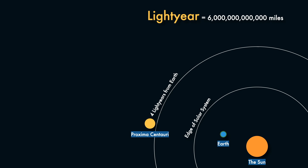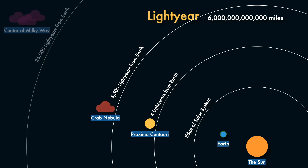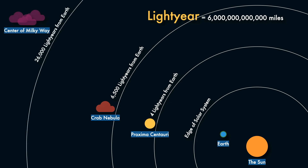The star Proxima Centauri is our nearest neighboring star, approximately 4 light years from Earth, meaning it takes starlight from Proxima Centauri 4 years to reach Earth. Other objects in the universe are much farther away — the center of the Milky Way is approximately 26,000 light years from Earth, so the light leaving the galactic center is actually 26,000 light years old when it reaches Earth. In a strange, mind-bending way, when we look up into the night sky, we're actually looking back in time.